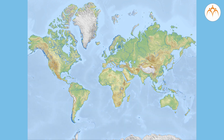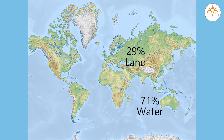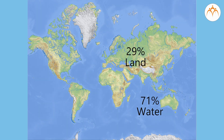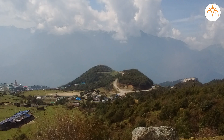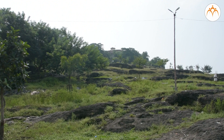Mother earth consists of 71% of water and 29% of land. Therefore, when we study the earth, it is observed that the water content is much more than the land. We have already studied the landforms such as mountains, plateaus, plains and hills.